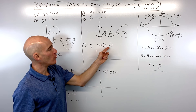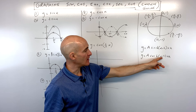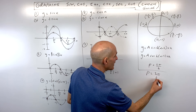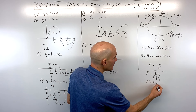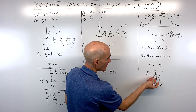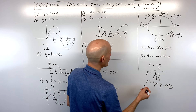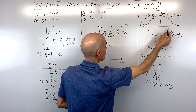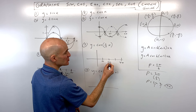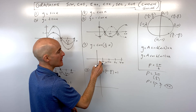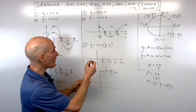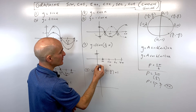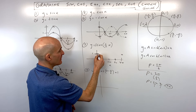For y equals cosine of one-half x, we look at the b value, which is one half. The period is two pi divided by one half — dividing by a fraction is like multiplying by the reciprocal, so that gives us a period of four pi. I mark the x-axis with four pi and divide it into four pieces: pi, two pi, three pi, four pi. The amplitude is one because it hasn't been stretched vertically. Cosine starts at the maximum, back to the midline, down to the minimum, back to the midline, then back to the maximum. The period changed because the x's were effectively multiplied by two.